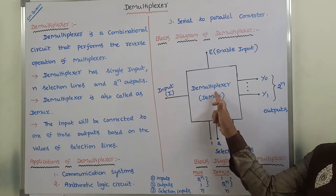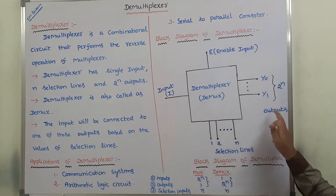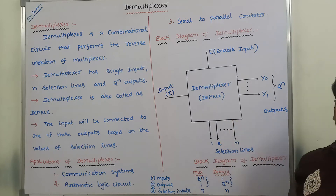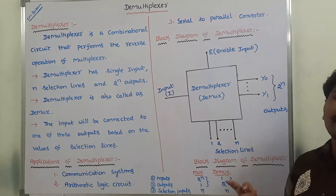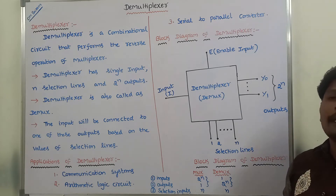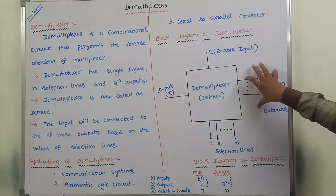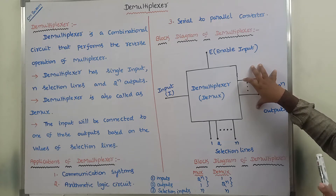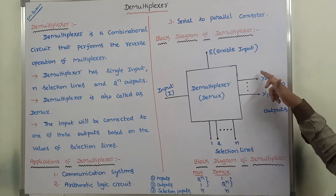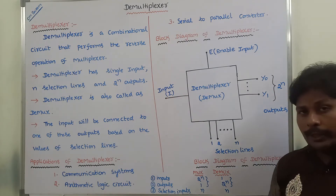This is the block diagram of demultiplexer. A demultiplexer is a combinational circuit that can take only one input and produce 2^n number of outputs. Here we are using n number of selection lines, so by using these n selection lines we can select only one output. Whatever output is selected, the input is connected to that output. Among 2^n outputs, to select only one output we use n selection lines, and the single input I is connected to that selected output.